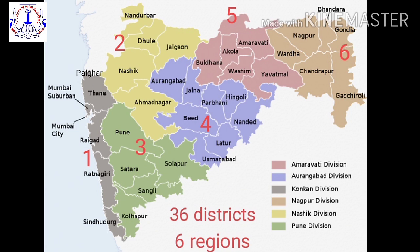The districts in the Pune region are Pune, Satara, Sangli, Solapur, and Kolhapur. The districts in the Aurangabad region are Aurangabad, Jalna, Beed, Parbhani, Hingoli, Nanded, Latur, and Osmanabad. The districts in the Amravati region are Amravati, Akola, Buldana, Washim, and Yavatmal. And the districts in the Nagpur region are Nagpur, Wardha, Chandrapur, Bhandara, Gondia, and Gadchiroli.